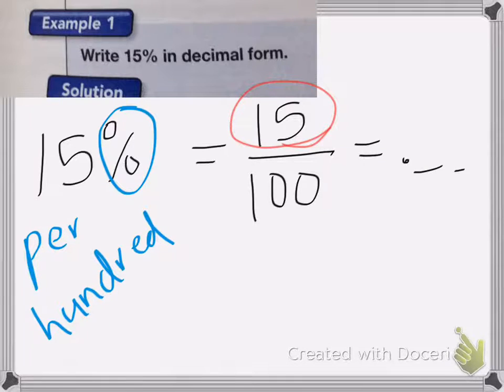So the hundredths place value is the second one. So it'll be 15 hundredths, and that's my correct answer.